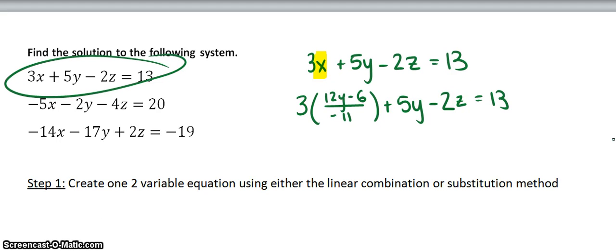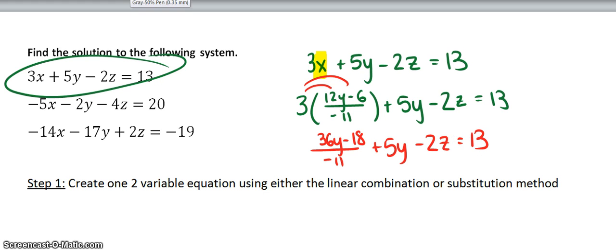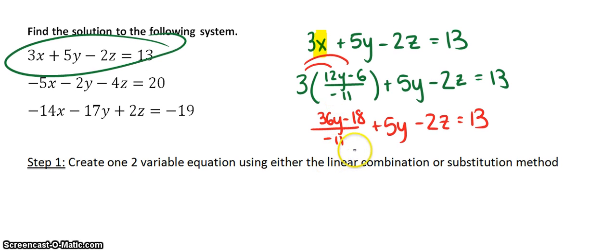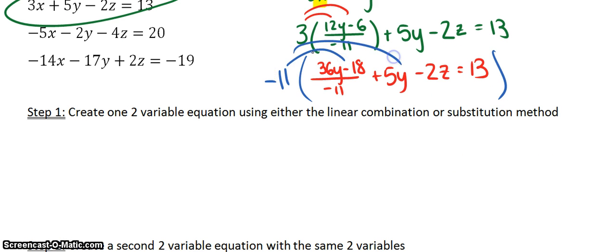And I know this is ugly, and there's some fractions, but it's nothing we can't handle. So first thing I'm going to do is I'm going to distribute the three. So you're going to get (36y - 18)/(-11) + 5y - 2z = 13. This is the last step I'm going to share with you, and then the rest you're going to do on your own. My advice is if you have a fraction, well, you have two options. You can create a common denominator and try to add fractions, or you can clear the fraction. I recommend clearing the fraction just because then you don't have to deal with fractions. So if you multiply everything by -11, you can clear the denominator here. So if I multiply -11, it's like -11/1. So what would happen is that these -11s would cancel.